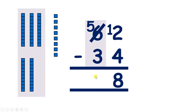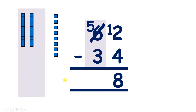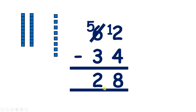Now we can move on to our tens. We don't have 6 tens because we've exchanged, so we have 5 tens and we want to subtract 3 tens. Let's subtract 1, 2, 3 — that leaves us with 2 tens. So 62 minus 34 equals 28.